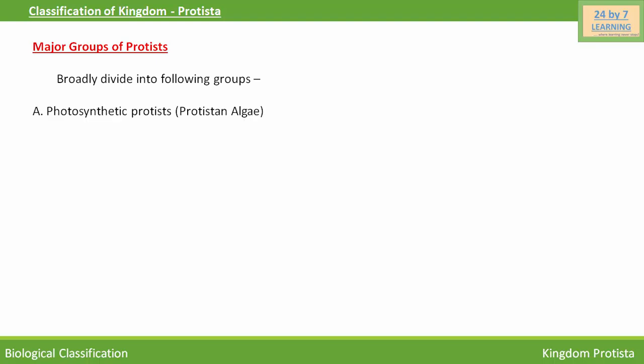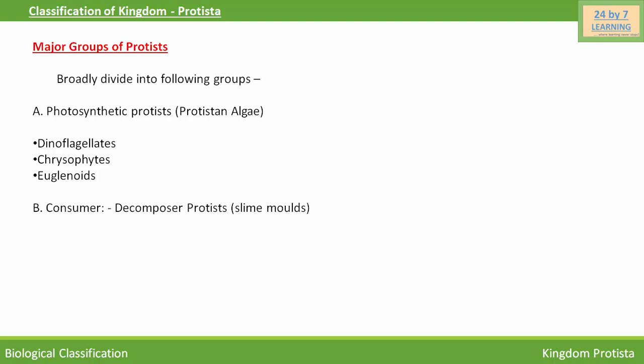Here is a classification of Kingdom Protista. They are broadly classified into the following groups. Some protists are photosynthetic — they are called protistan algae, and they include dinoflagellates, chrysophytes, and euglenoids. Some protists are consumers, saprophytic in nature, depending on dead organic matter for their food. These are decomposer protists.